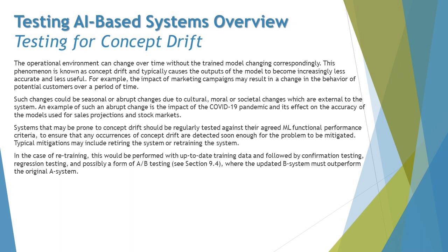In the case of retraining, this would be performed with up-to-date training data, followed by confirmation testing, regression testing, and possibly a form of A/B testing — which means the updated B system must outperform the original A system. Here, alpha and beta are not being referred to as user acceptance testing, but rather as System A, which is what you created initially and are trying to retire, and System B, which is what you have built today. B should always perform better than the previous system, A.